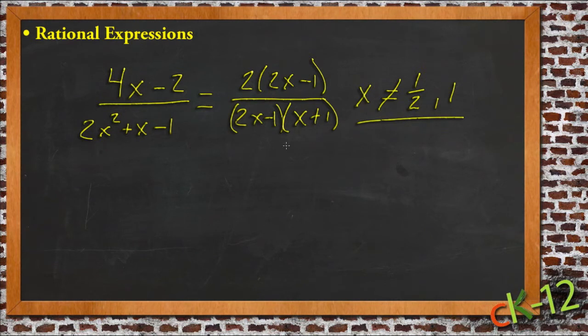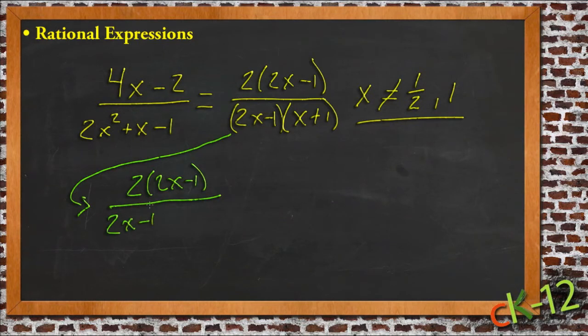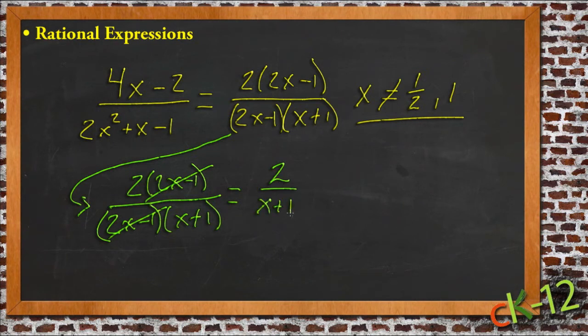But if we continue on from here and then take this same expression, rewrite it down here, we get 2 times 2x minus 1 over 2x minus 1, x plus 1. And then we cancel the 2x minus 1 top and bottom, which is perfectly valid. Then we end up with 2 over x plus 1. And now there's only one value x can't be. x just can't be negative 1.